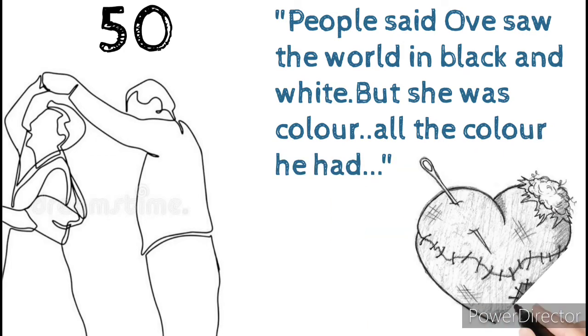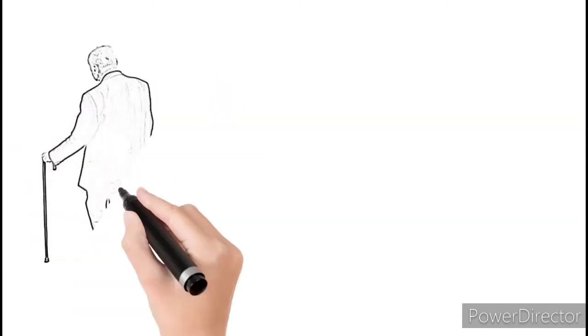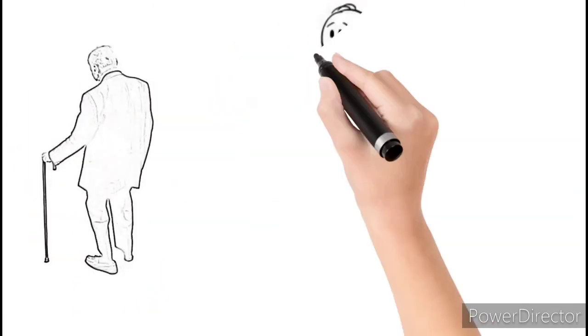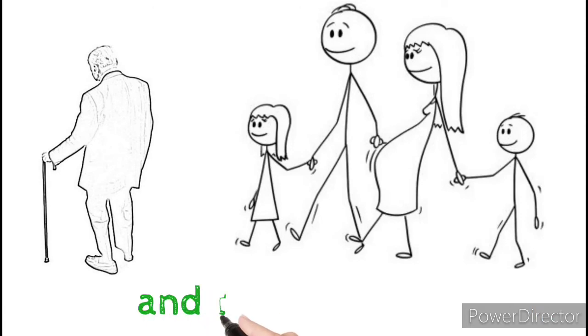And this is how the story begins, with an arrogant man strict to rules. Then in his neighborhood comes a pregnant woman with two children and a husband, and things start occurring.